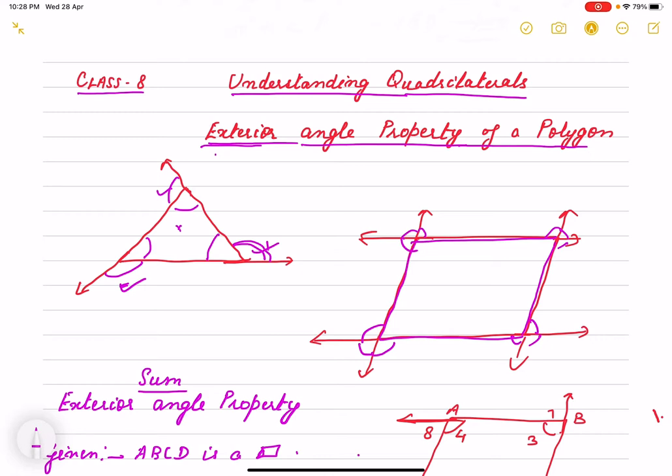If you remember we have done in triangle exterior angle property, that if any side is produced, this exterior angle is equals to sum of interior opposite angles.